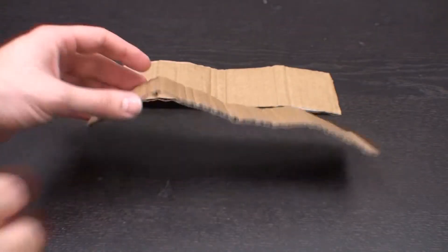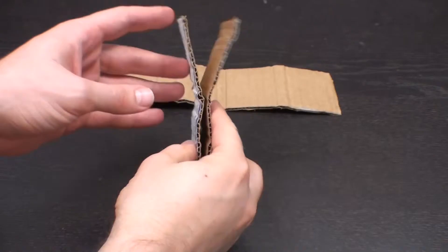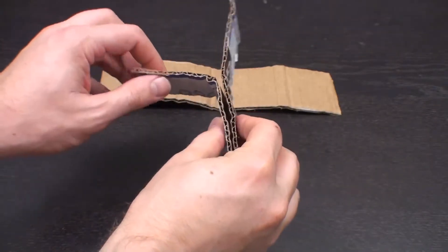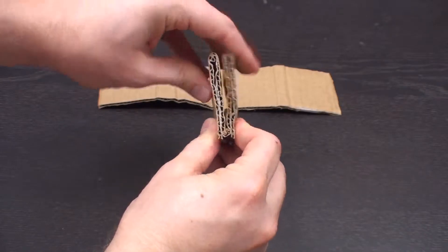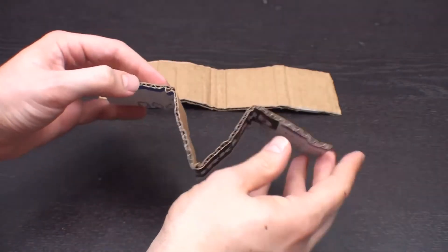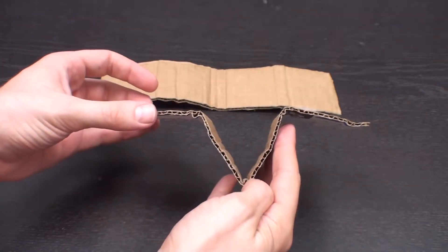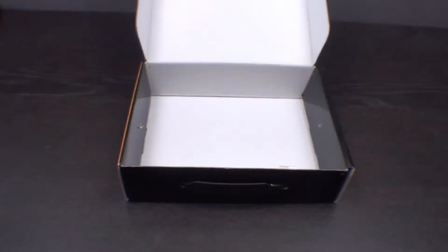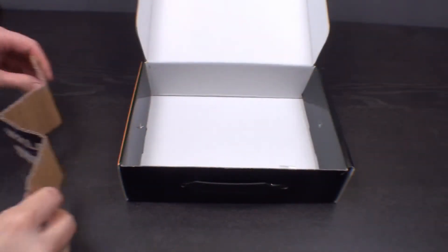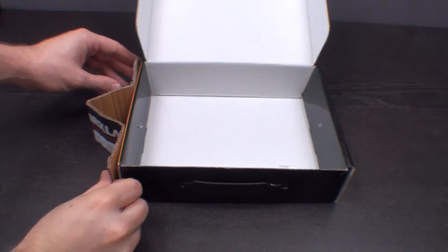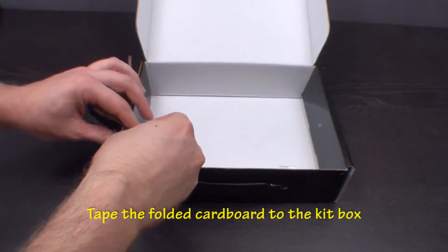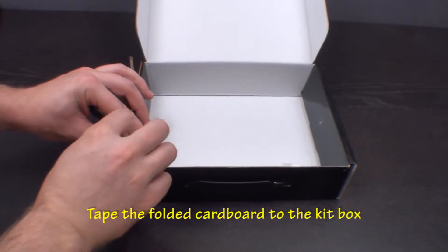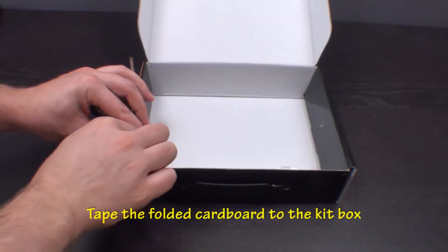Start by folding the cardboard into quarters. Use the box the kit came in as the base for the winding mechanism. Tape the folded cardboard onto the side of the box.